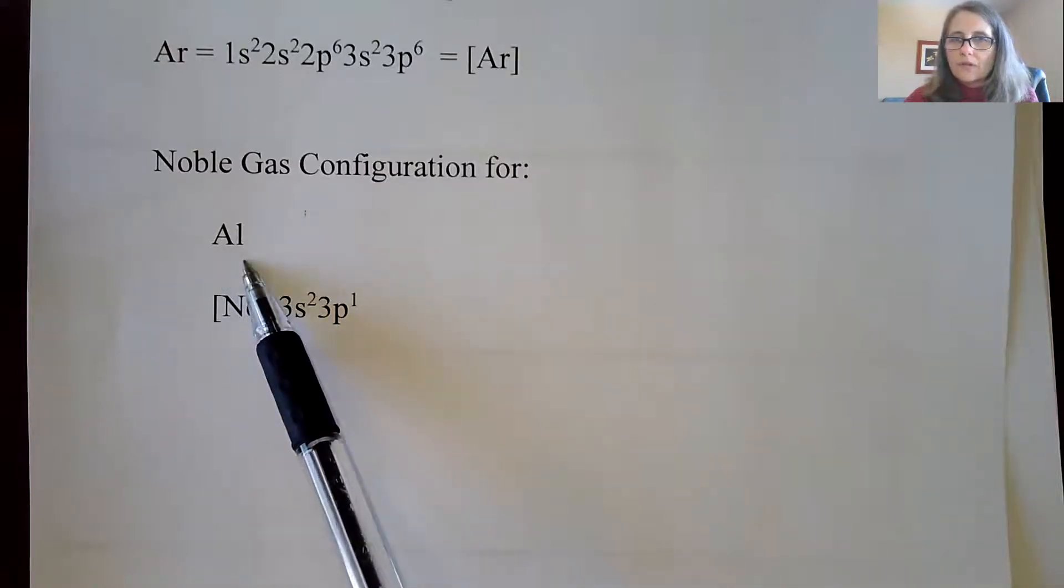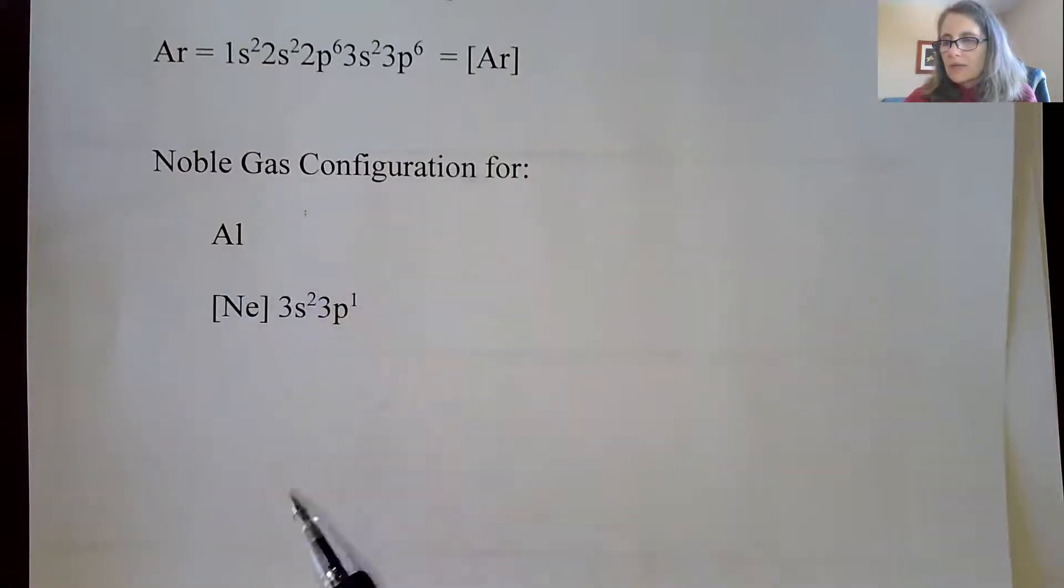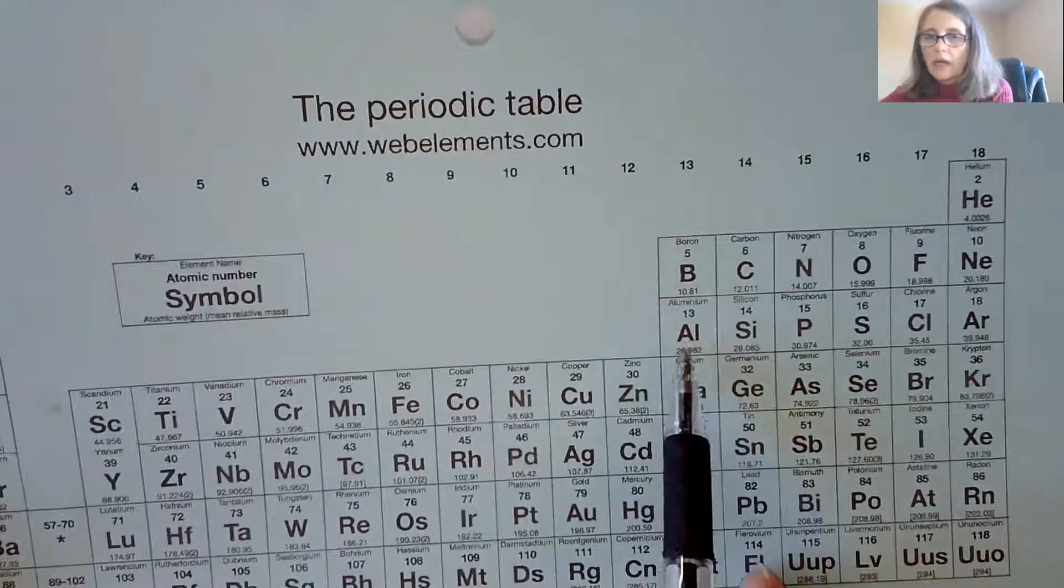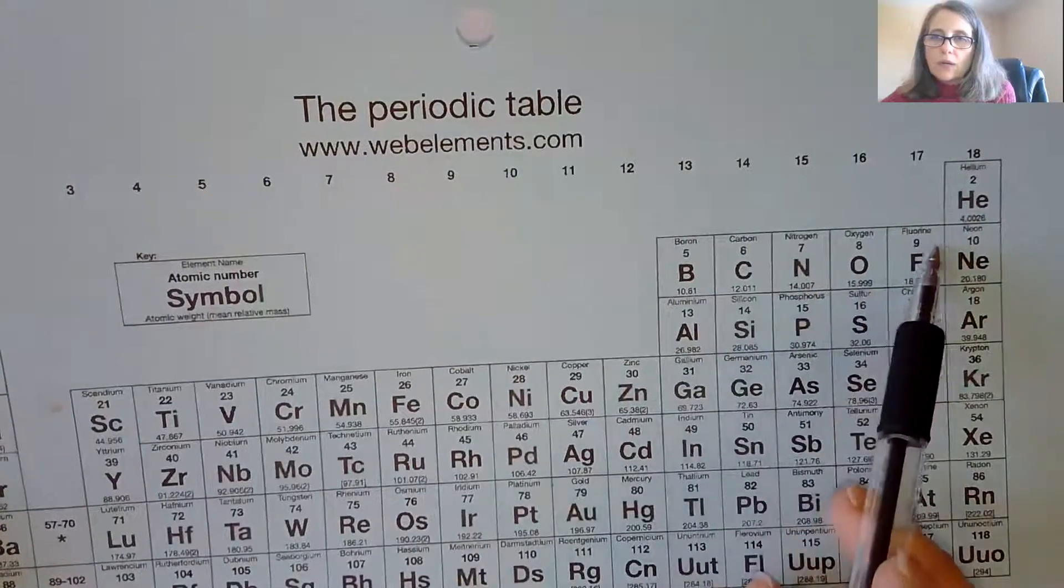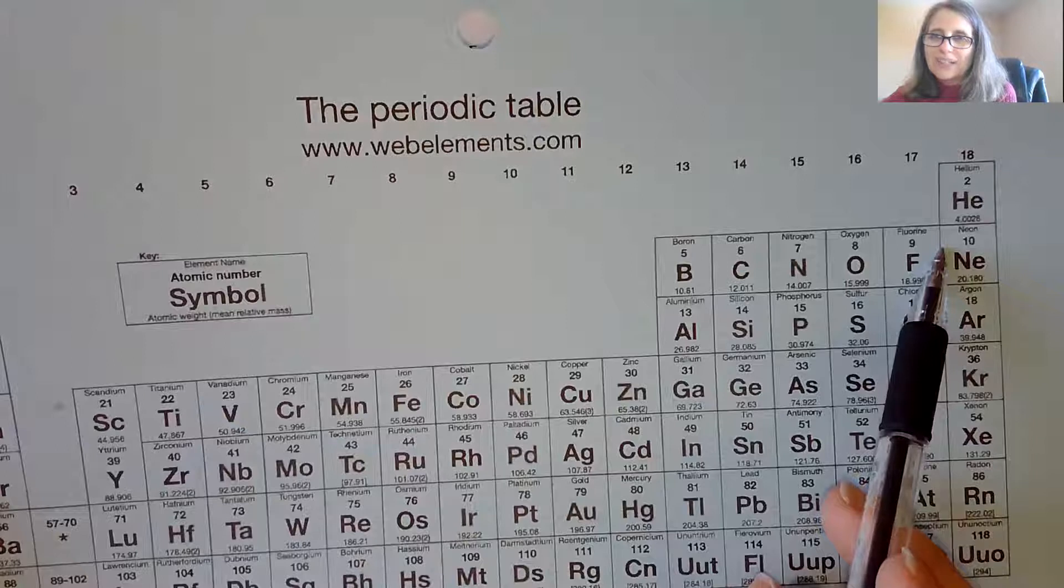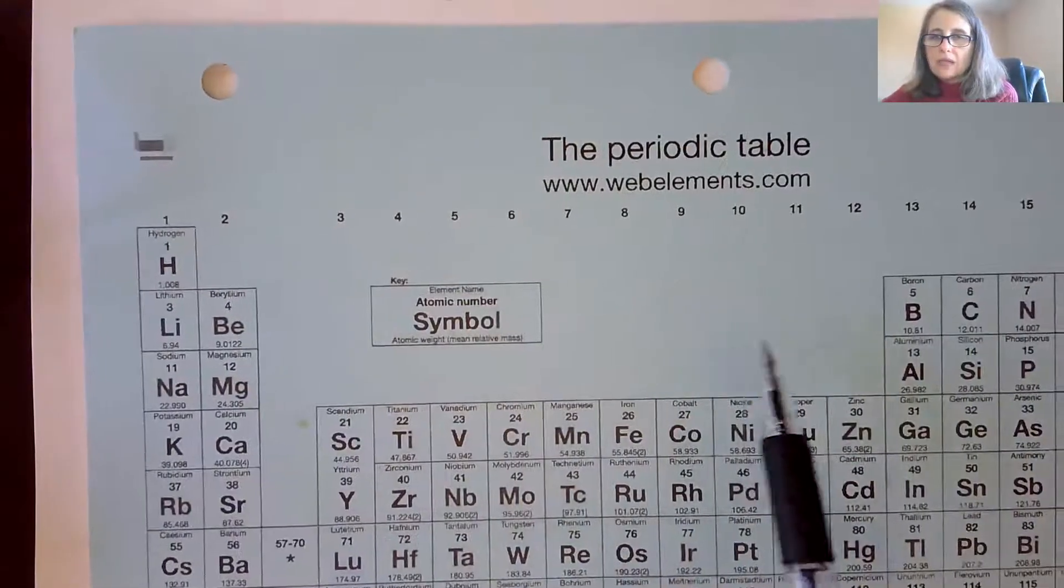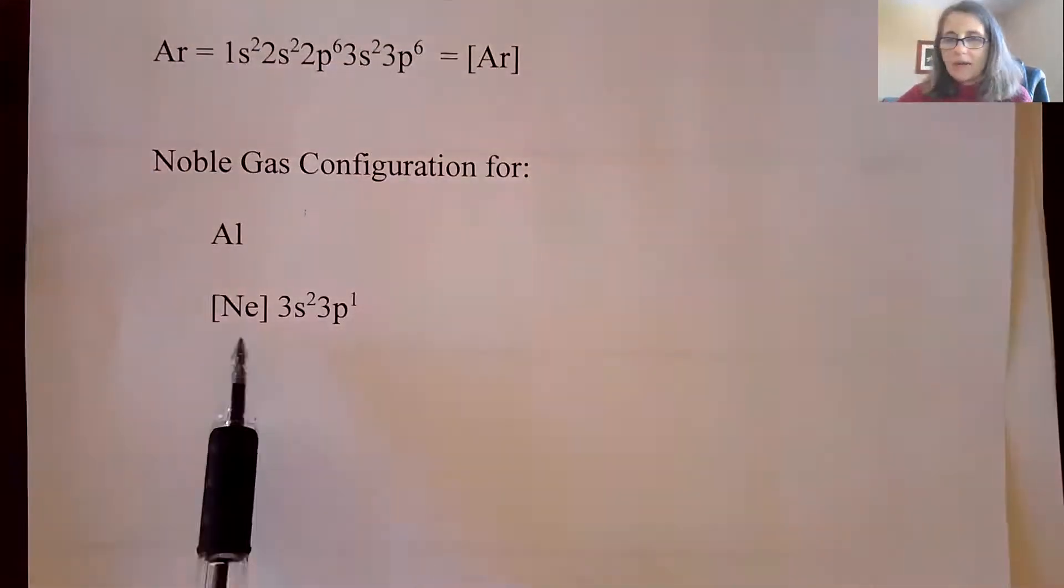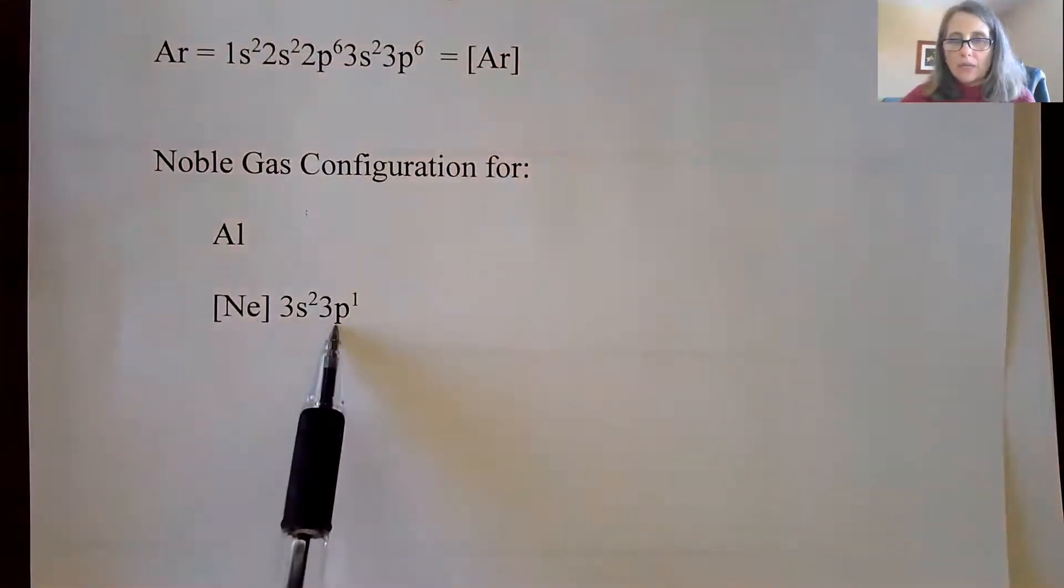So let's say we did the electron configuration of aluminum. So instead of starting at 1s², 2s², 2p⁶, again, aluminum is in that third row. So what I do is I go to the row above it, and I see neon, that's going to take care of my first 10 electrons, and then I'm going to go down to the 3s and then the 3p. So then I have neon 3s² 3p¹.